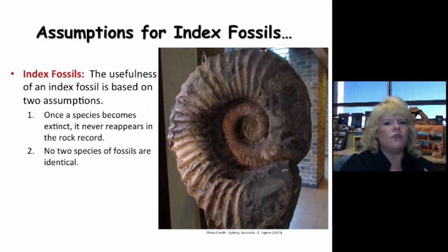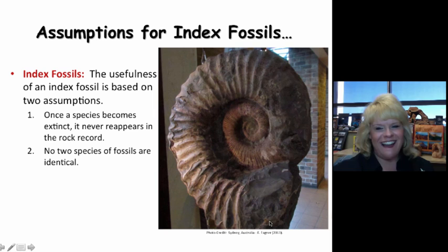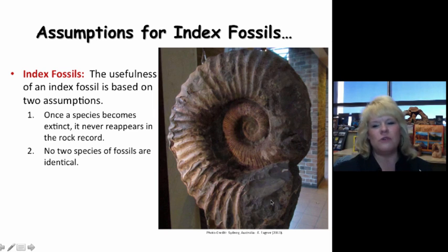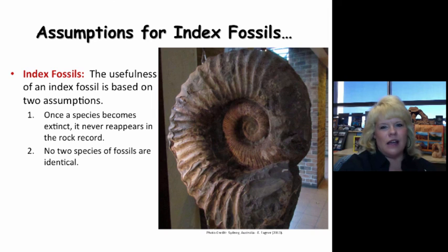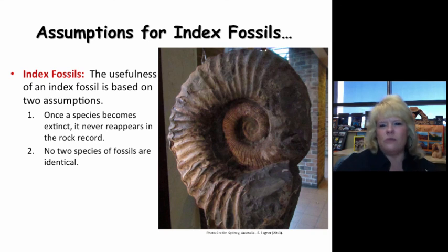Index fossils are extremely useful and recognizable around the world. While in a shop getting opals for my mom in Australia, these enormous fossils were hanging in the window — this one was probably about four feet wide. That is a recognizable ammonite, and ammonites went extinct at the end of the Cretaceous Period. They started at a very distinguishable time in geologic history and had a clear end, which makes them a great candidate for index fossils, especially these giant ones.